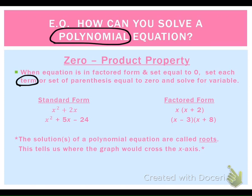Standard form means the exponents are in order from least to greatest. Examples of standard form would be x² + 2x, or x² + 5x − 24. Those are in standard form because the exponents are in order from least to greatest as we look left to right. If you take x² + 2x and put it into factored form, you get x(x + 2). And x² + 5x − 24 factors to (x − 3)(x + 8).